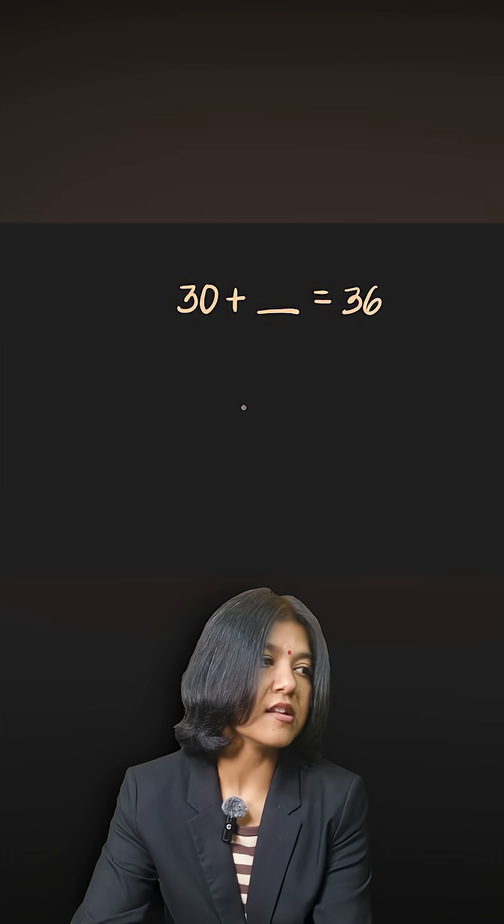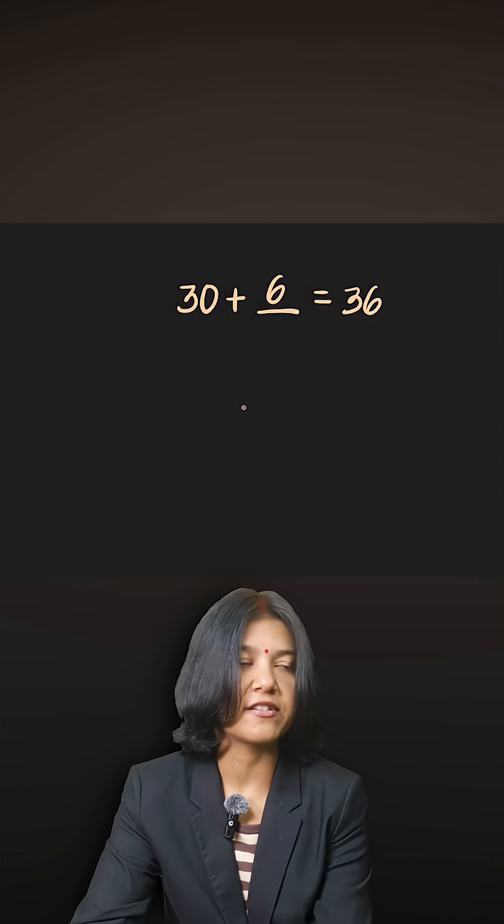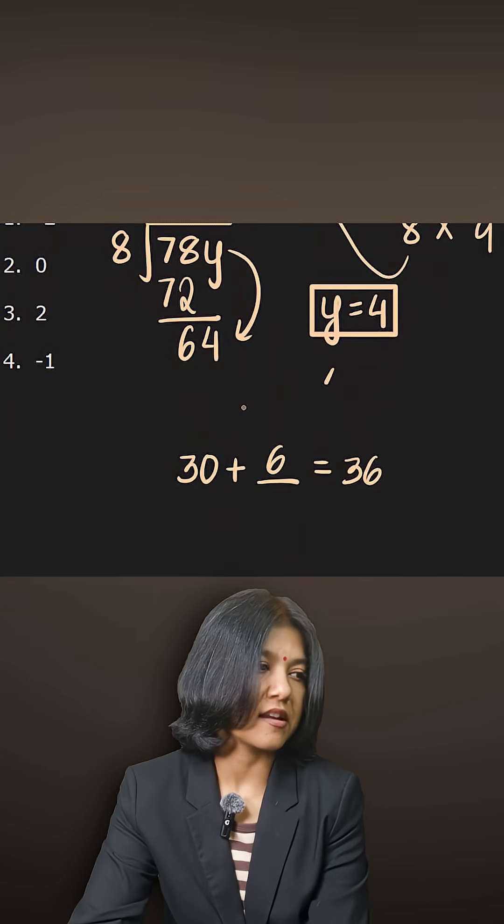So what's the next multiple? 30 plus how much gives you a multiple of 9? Definitely 30 plus 6 is 36, which is a multiple of 9. So therefore this digit x has to be 6.